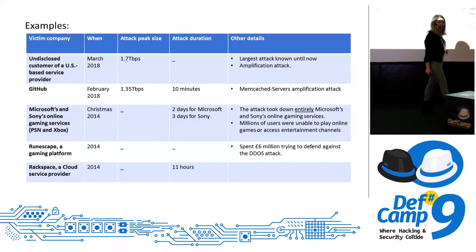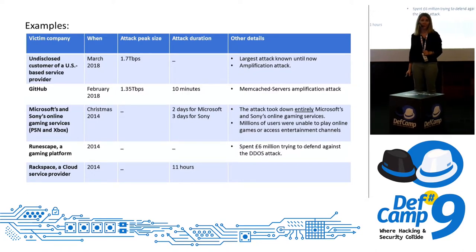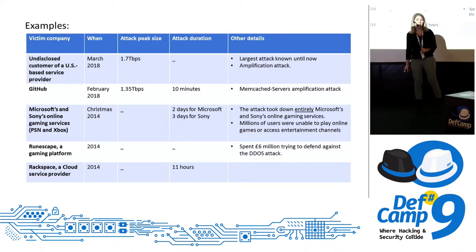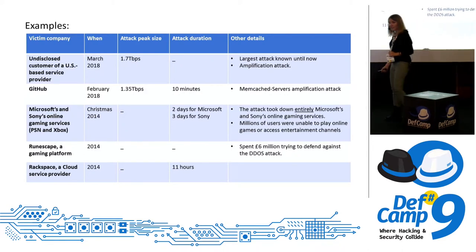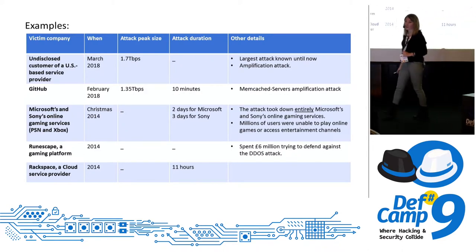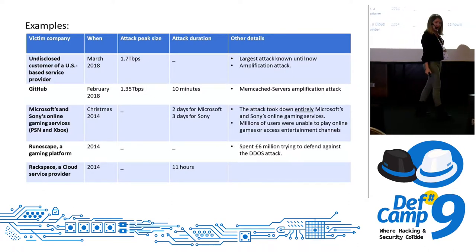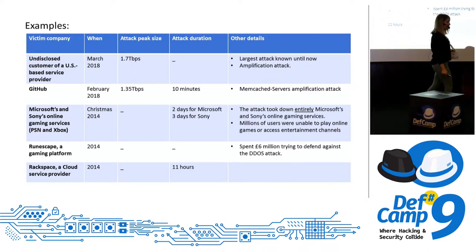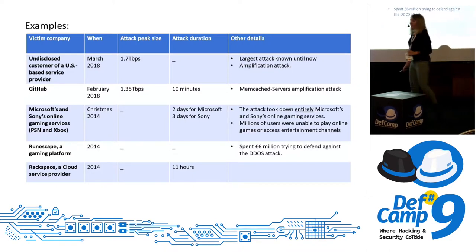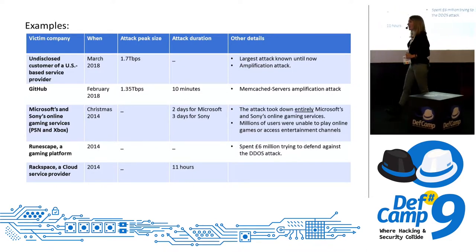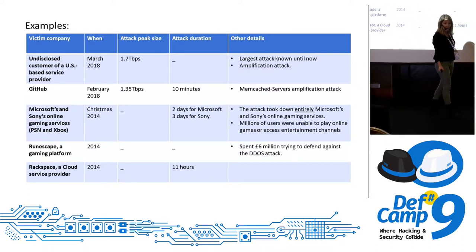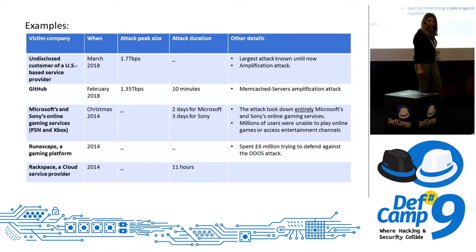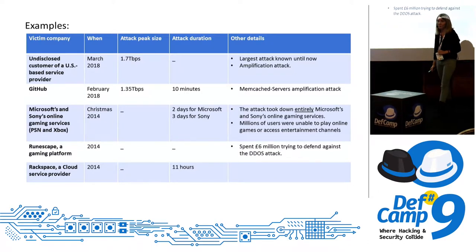A few examples. Do you remember the Christmas of 2014 when the Xbox online platform wasn't available for two days? That was because of a DDoS. Apart from that, many companies rely on GitHub. Fortunately, this year GitHub managed to mitigate a 1.3 terabits per second attack in under 11 minutes. But what if it had lasted for a couple of days?